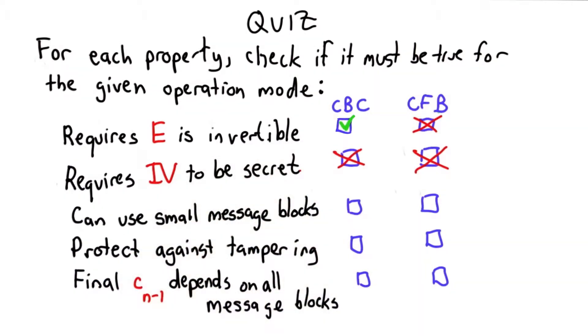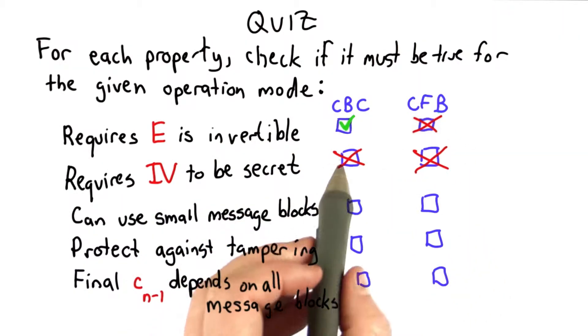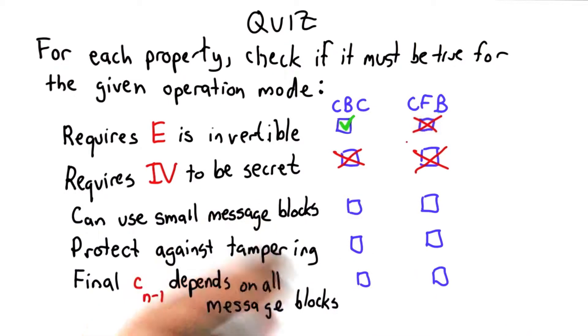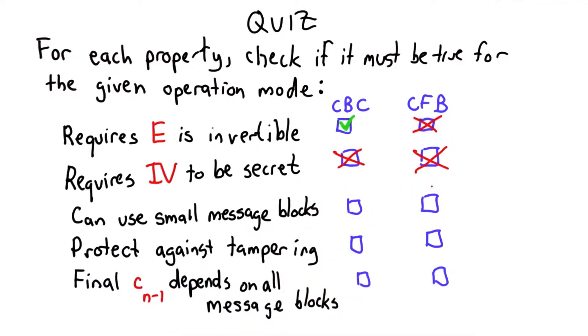Neither of them require the IV to be kept secret. And one way to see this is if you look at the structure of the ciphers, they're using the IV as though it was ciphertext block negative one. And all the other ciphertext blocks are visible to the attacker. So if you think about how it's used, it's used just like another ciphertext block. There's no security required in keeping the IV secret.